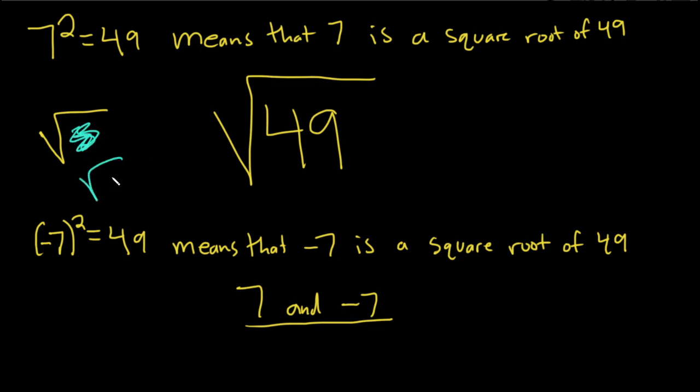We say non-negative because of the special case where the square root of 0 is equal to 0. So if you have a positive number, you want the positive square root of 49.